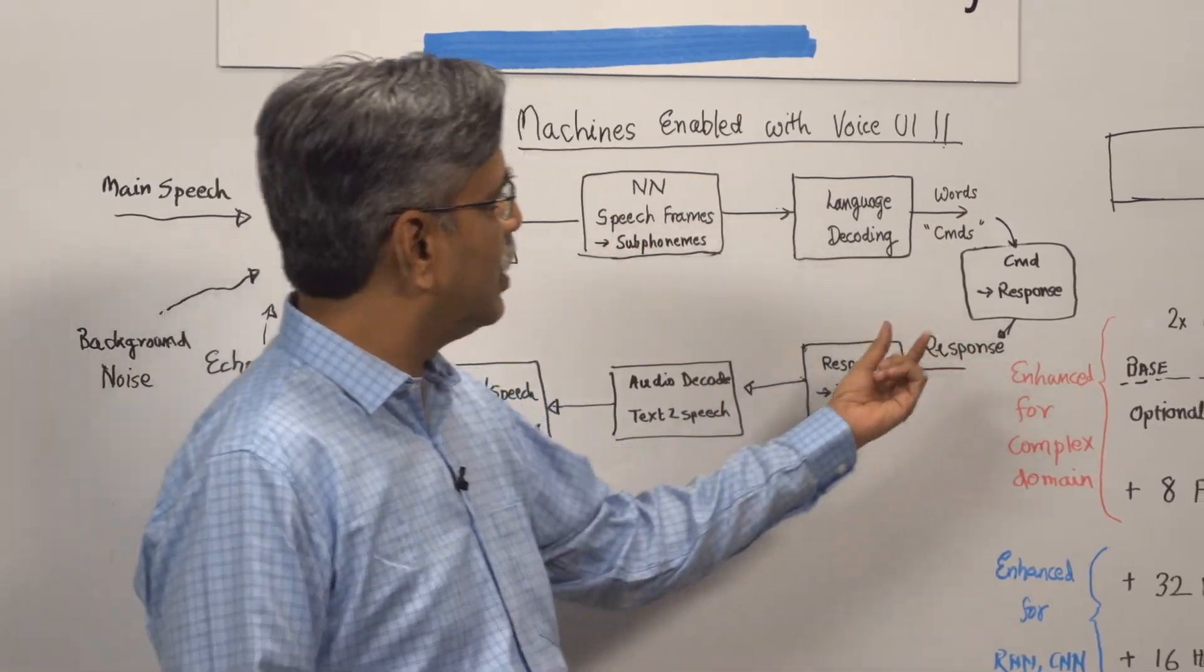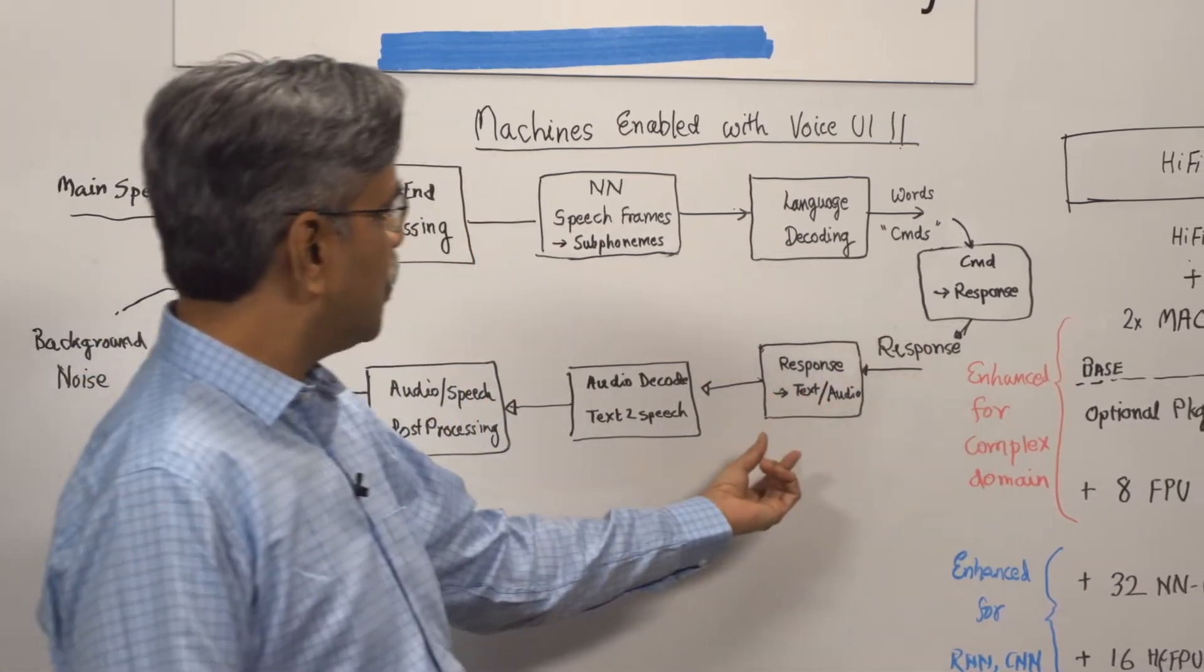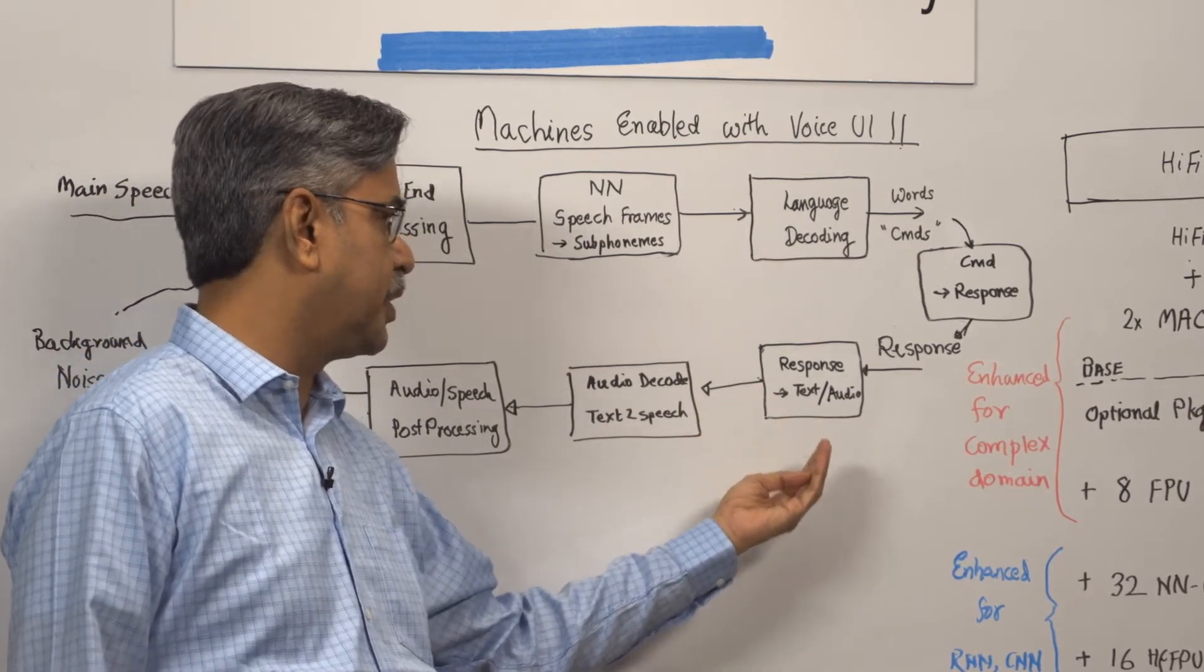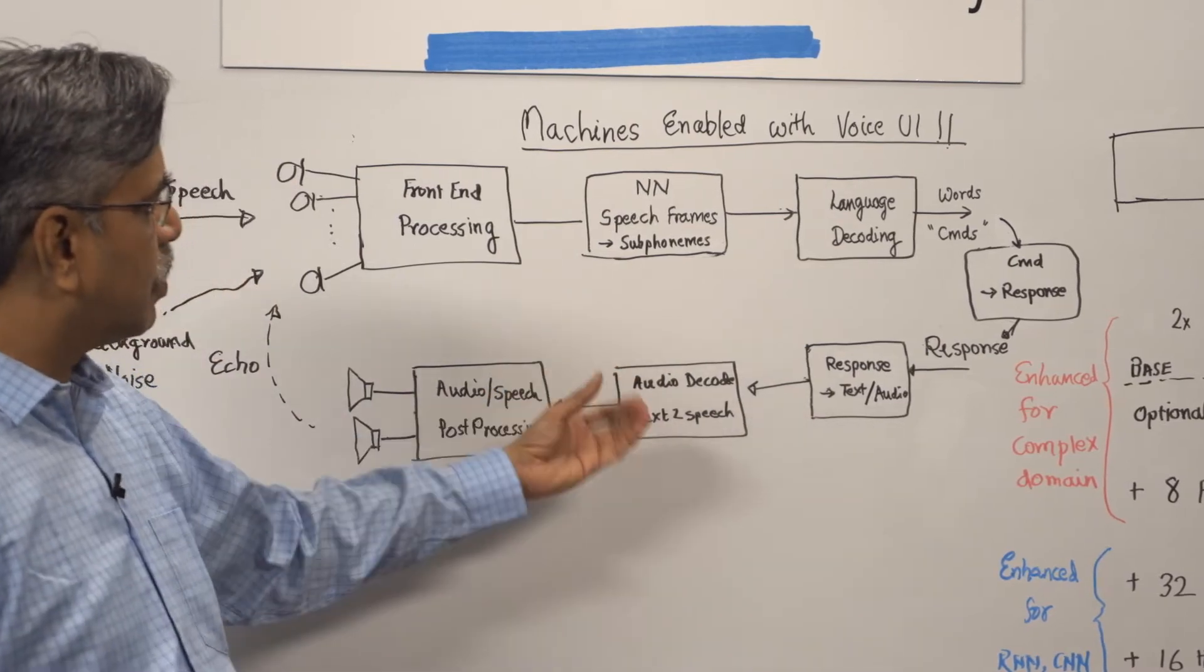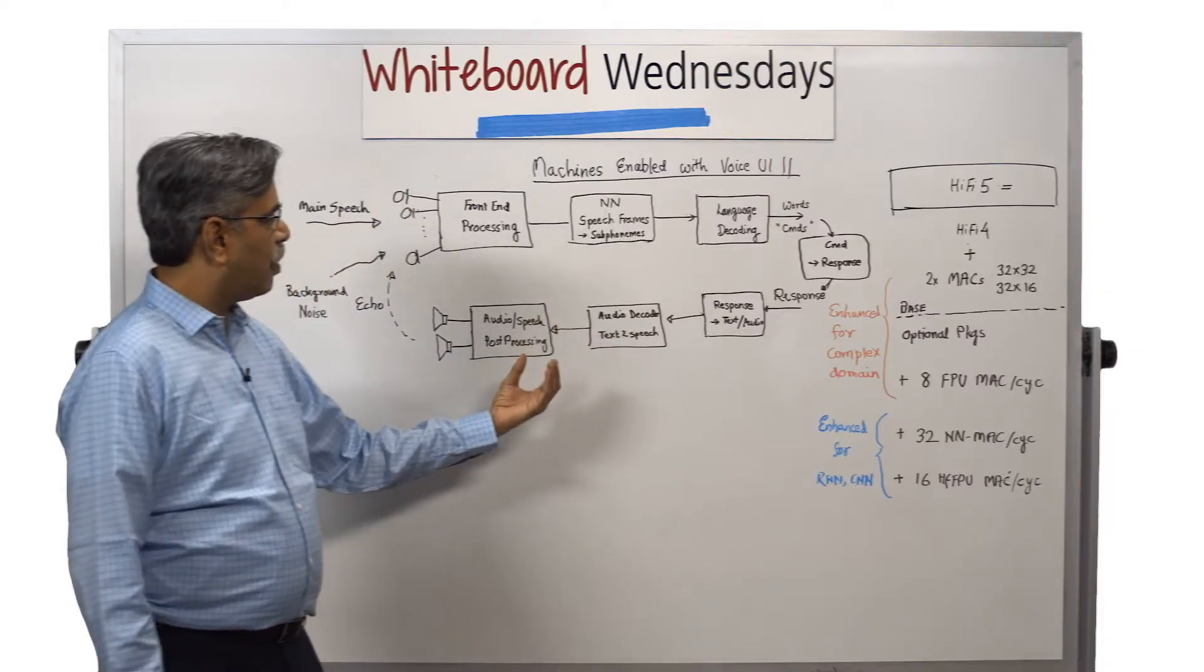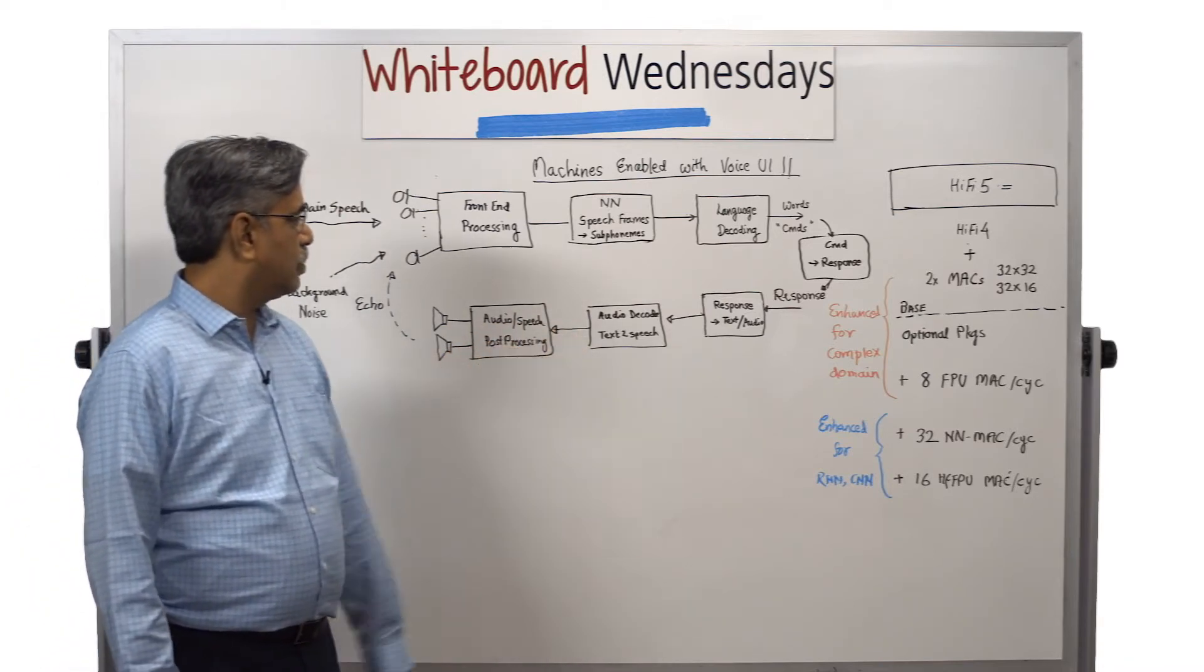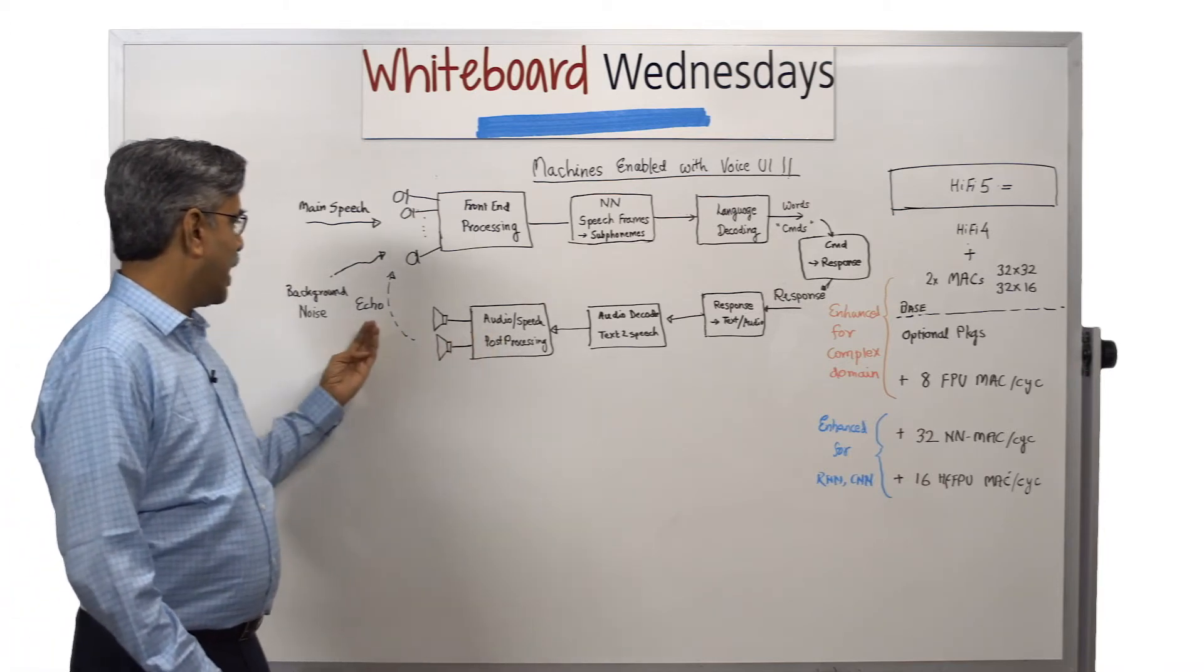Machine will interpret those commands and create a response. That response can be either text or audio, pre-recorded audio speech response. At this end, you will decode that audio or speech response or form text-to-speech converter and then pass it through the audio and speech processing unit, post-processing unit and play it back.